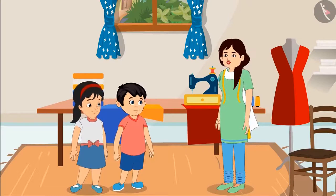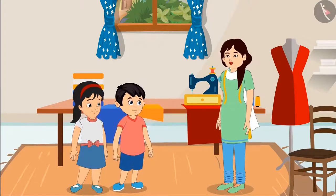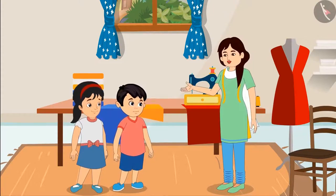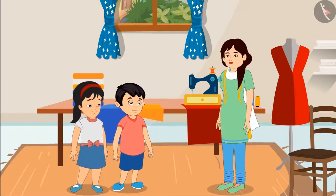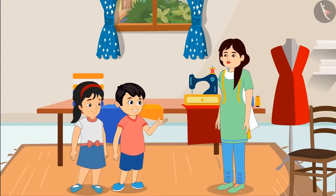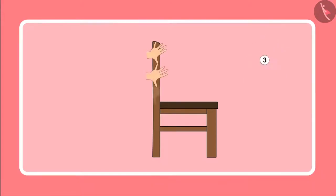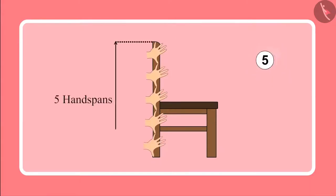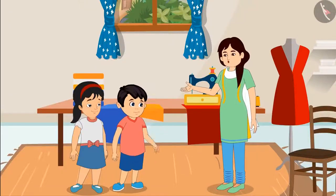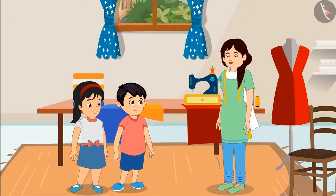Aunty encourages both children to take measurements of some items in the shop. Chotu measures the length of a chair: one, two, three, four, five — it is five hand spans long. Aunty praises him.